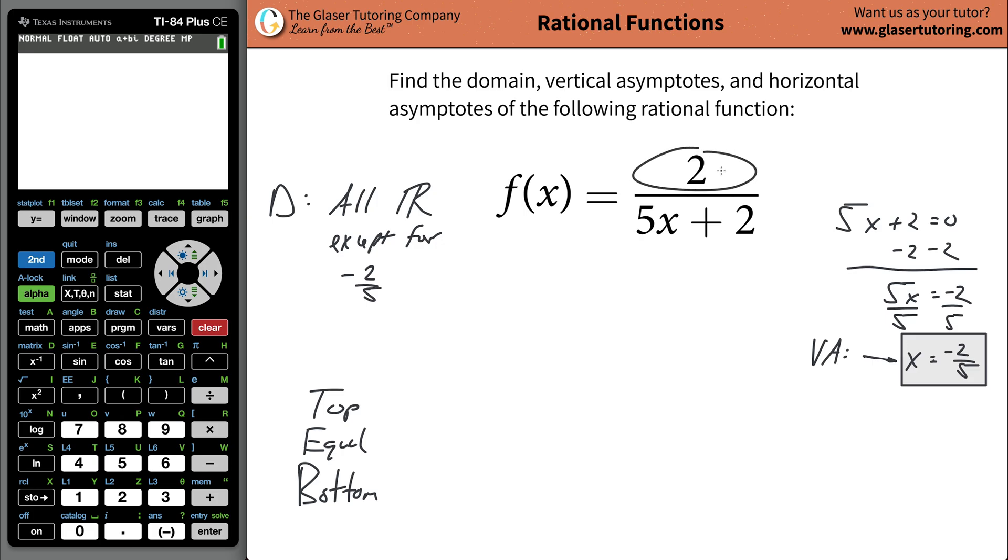Now, since there's no x in the numerator, we would say that this thing is bottom heavy because there's an x in the denominator. Now, if you had an x in the numerator and it was to the first power and an x in the denominator and it was to the first power, that's considered equally heavy. And then if you had x squared, let's say, in the numerator and just x in the denominator like that, that would be considered top heavy now.